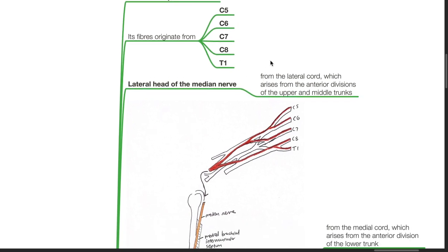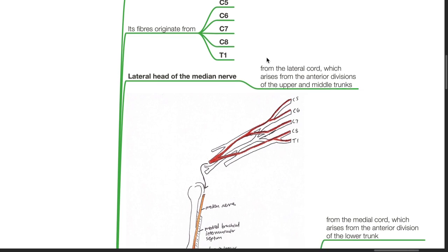The lateral head of the median nerve arises from the lateral cord, which arises from the anterior divisions of the upper and middle trunks.